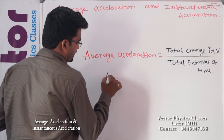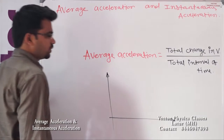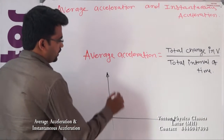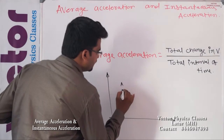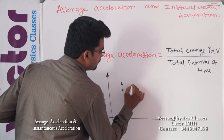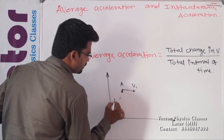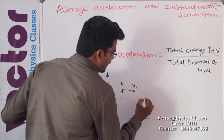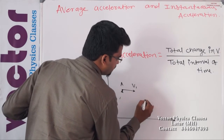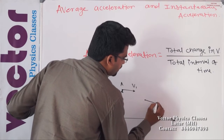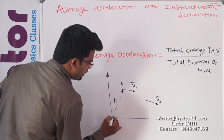Now let us consider the graph. At position A, the velocity of the particle is V1 and the position vector is R1, and at this point the velocity vector of the particle is V2 and the position vector is R2.